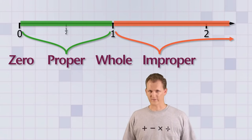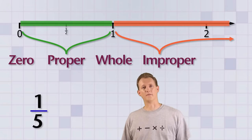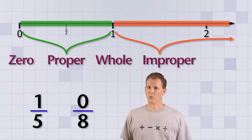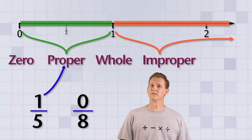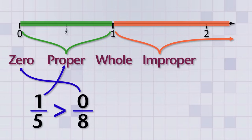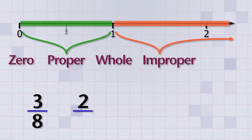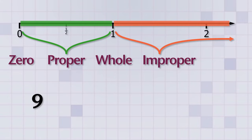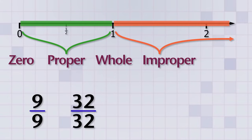Let's do a few comparisons to get the hang of it. Here we have 1 over 5 and 0 over 8. Since 1 over 5 is a proper fraction and 0 over 8 is a zero fraction, 1 over 5 is greater than 0 over 8. Now let's do 3 over 8 and 2 over 2. Since 3 over 8 is a proper fraction and 2 over 2 is a whole fraction, 3 over 8 is less than 2 over 2. Now what about 9 over 9 and 32 over 32? Since they're both whole fractions and whole fractions are always equal to 1, these fractions are equal.